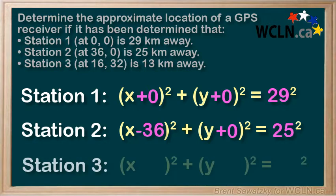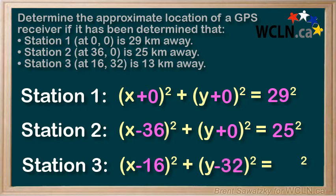And station three, x minus 16 squared, that is station three is 16 kilometers east of the origin, what we consider 0, 0. And then let's add y minus 32 all squared, and that indicates we're 32 kilometers north of the origin. And the circle's radius is 13 kilometers, so 13 squared.